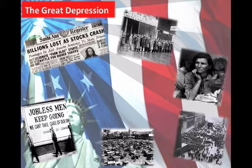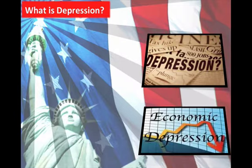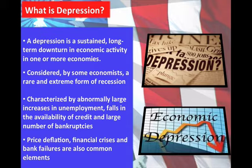Now let's talk about the context that Lenny and George were facing, which is the Great Depression. The Great Depression is when the American economy went from the unprecedented prosperity of the 1920s to the unprecedented misery of the 1930s. A depression is a sustained long-term downturn in economic activity in one or more economies — in this case, both the world and the U.S. A depression is considered a rare and extreme form of recession, characterized by abnormally large increases in unemployment, a fall in the availability of credit, a large number of bankruptcies, price deflation, and financial crises called bank failures.